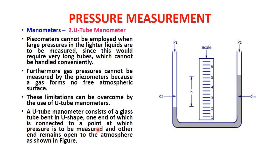A U-tube manometer consists of a glass tube bent in a U-shape, one end of which is connected to the point at which pressure is to be measured, and the other end remains open to the atmosphere. To measure pressure at point 1 (P1), this end is connected to the pipe while P2 is open to atmosphere. This creates a pressure difference between the measurement point and atmospheric pressure.